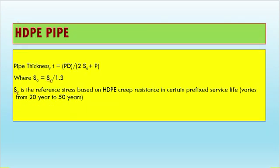For HDPE pipe, the pipe thickness formula is: T = PD / (2 × SA + P), where SA equals SY divided by 1.3. SY is the design stress based on HDPE creep resistance, with a service life that varies from 20 to 50 years.